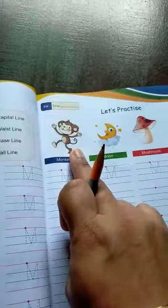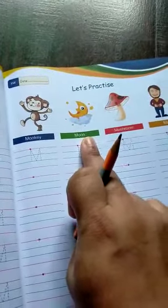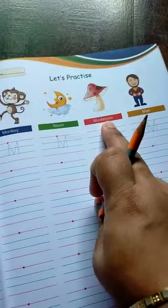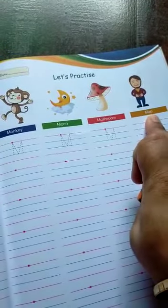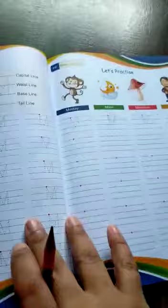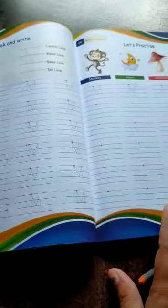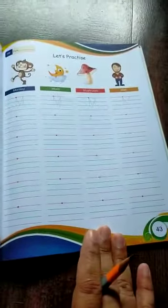M for Monkey, M for Moon, M for Mushroom, M for Man. We have two pages of letter M. We have to complete these two pages.